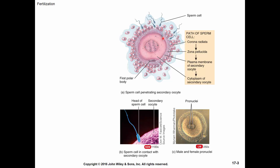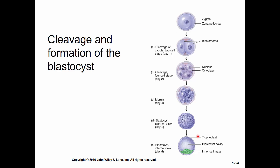Fertilization by the sperm is the trigger for the second meiotic division so that the cell can become a mature ovum. Then the two nuclei fuse and you have what's called a zygote. The zygote is contained within the zona pellucida, which not only prevents other sperm from fertilizing the cell, but also prevents the embryo from implanting too early since we are still in the fallopian tube.